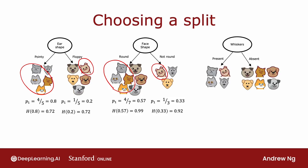The third possible choice of feature at the root node is the whiskers feature, where we split based on whether whiskers are present or absent. In this case, p1 on the left is three-quarters, p1 on the right is two-sixths, and the entropy values are as follows.